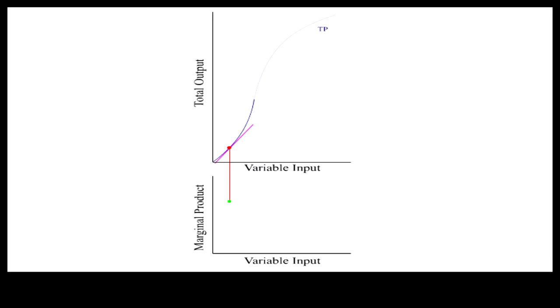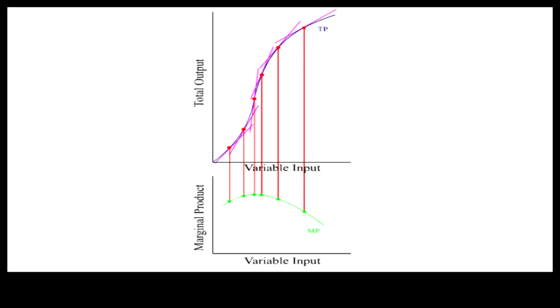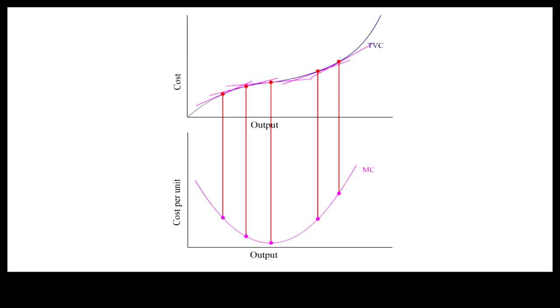Just as we can derive the marginal product curve MP from the total product curve TP by measuring the slope of the tangents to the TP curve, we can derive the marginal cost curve MC from TVC. While MP is the additional output from additional variable inputs, MC is the additional cost from additional output.